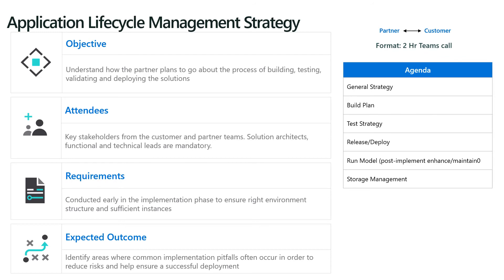The application lifecycle management strategy workshop is to understand how the partner plans to go about the process of building, testing, validating, and deploying the solutions. It's all about the ALM strategy to build, develop, and deploy the different solutions or updates and extensions to the original solution, covering all the release details, testing plans, automations for deploying, and automations for testing — making sure that all the details are there and everything is ready to move forward towards the success of the implementation.